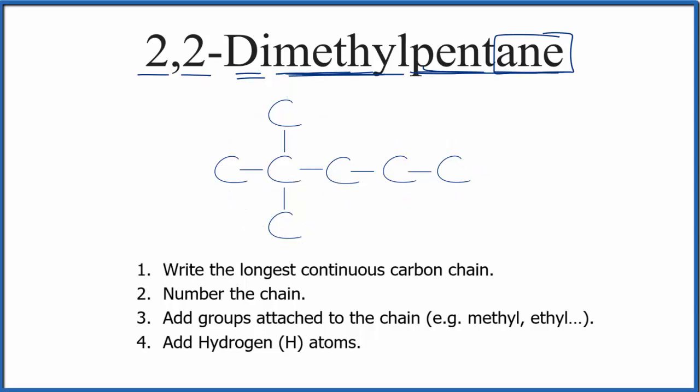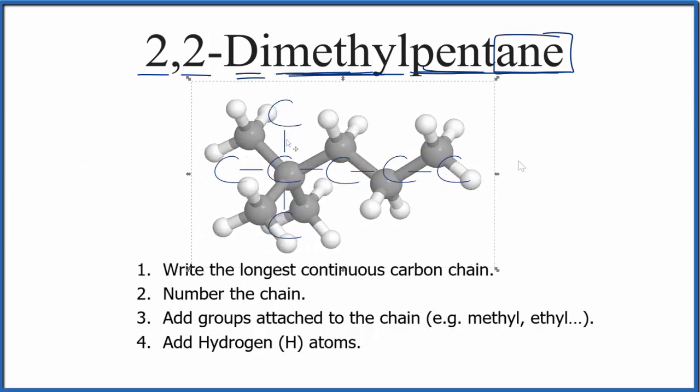If we looked at the three-dimensional structure here for 2,2-dimethylpentane, that would look like this. So the whites, those are the hydrogens. The black, the carbons.